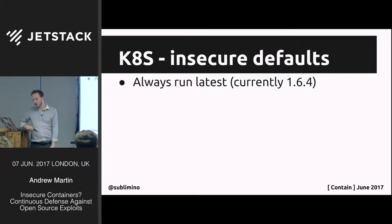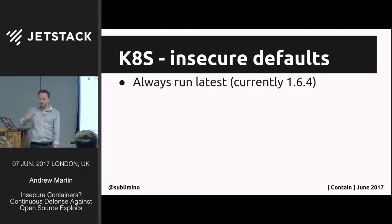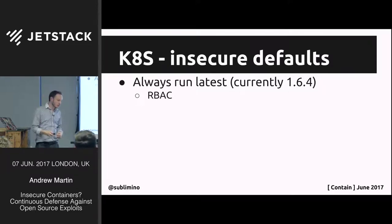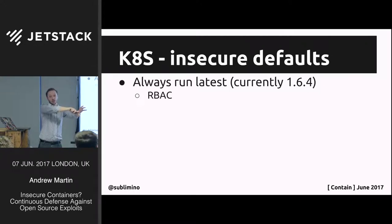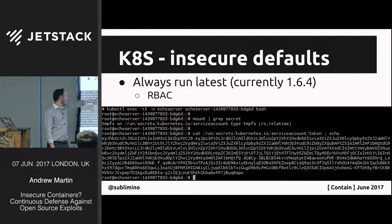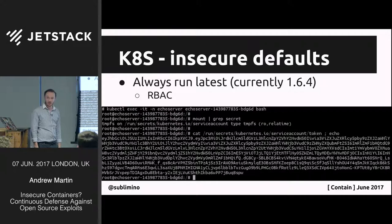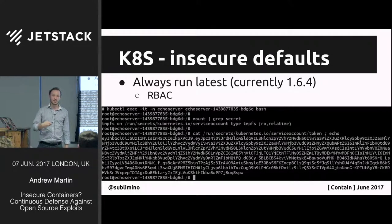Kubernetes has some insecure defaults — speed of delivery is a feature. As of 1.6 it now has role-based access controls (RBAC). Before that, every single container had a cluster-administrator-level security token mounted into it by default. If you ran a Shellshock attack — a remote code execution — and got a shell back on the container from your laptop, you could check for the mount, grep for 'secret,' and find the Kubernetes service account token: a cluster admin token mounted into every pod by default.